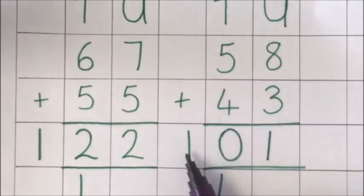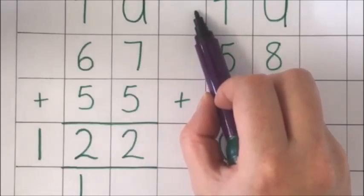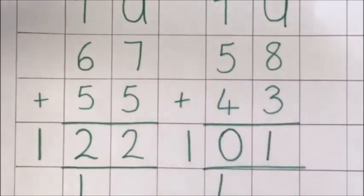As you can see, the answer has gone into this next place value column along which is the hundreds.